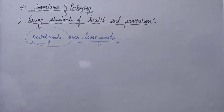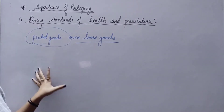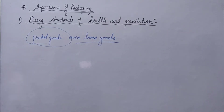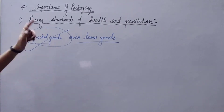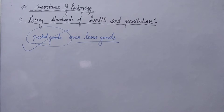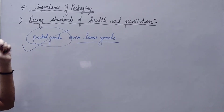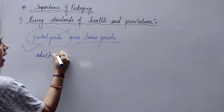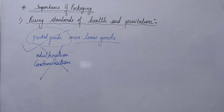Why do we prefer packed goods? Because in packed goods, there are less chances of adulteration or contamination. People have become more conscious about health, so they prefer packed goods over loose goods, as there are less chances of adulteration and contamination in packed goods. Adulteration means mixing of harmful substances, and contamination means harmful substances getting into the product.